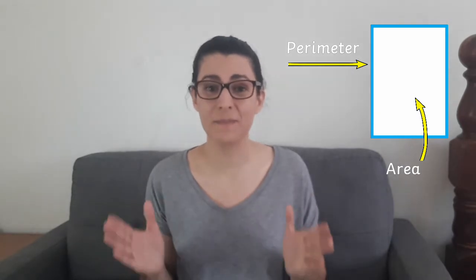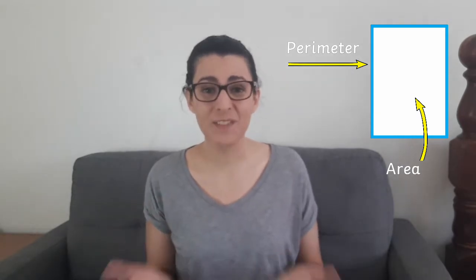Hi everybody, it's Ingrid from Twinkle and today I'm going to be sharing some ideas on how to teach about perimeter. Firstly, let's go over how to find perimeter. The perimeter of a shape is the outline, and the area of a shape is the space in the middle. To find the perimeter, you simply need to measure each of the sides of the shape and then add these numbers together.